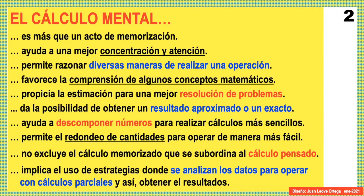Esto ayuda a la comprensión de algunos conceptos matemáticos que tengan que ver con el sistema de numeración decimal y con las operaciones básicas. También ayuda mucho a la resolución de problemas y a la estimación para poder comprobar si el resultado es el correcto. Por eso hablamos de un cálculo mental para un resultado aproximado o para un resultado exacto. También ayuda a descomponer números para realizar cálculos más sencillos, el redondeo de cantidades. El cálculo memorizado se subordina al cálculo pensado. Lo que es el cálculo mental es analizar los datos, operar con cálculos parciales y obtener el resultado.